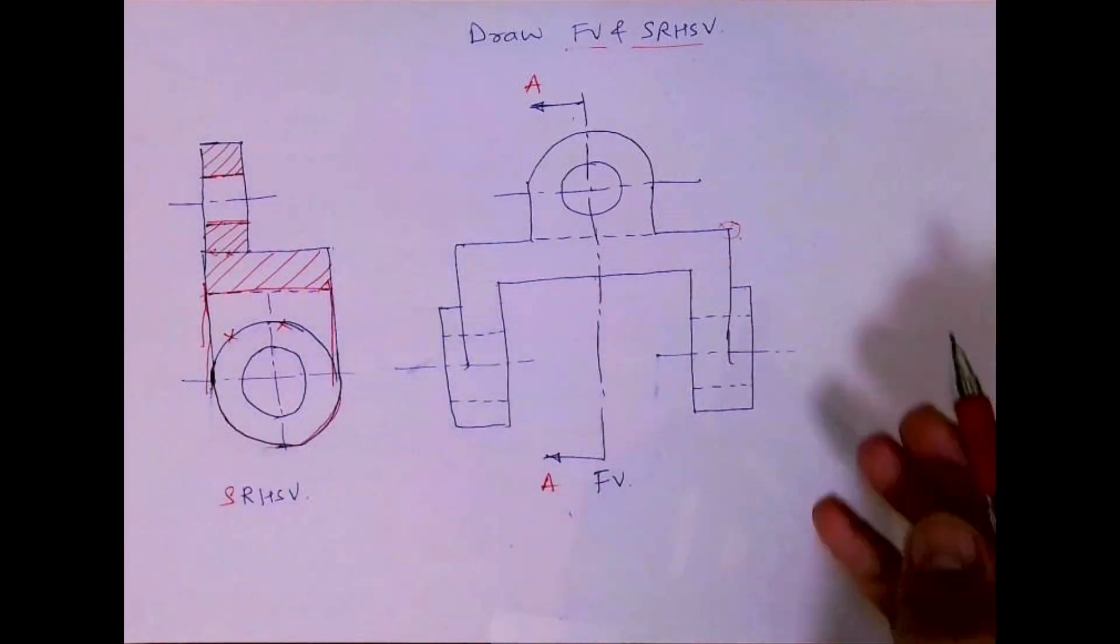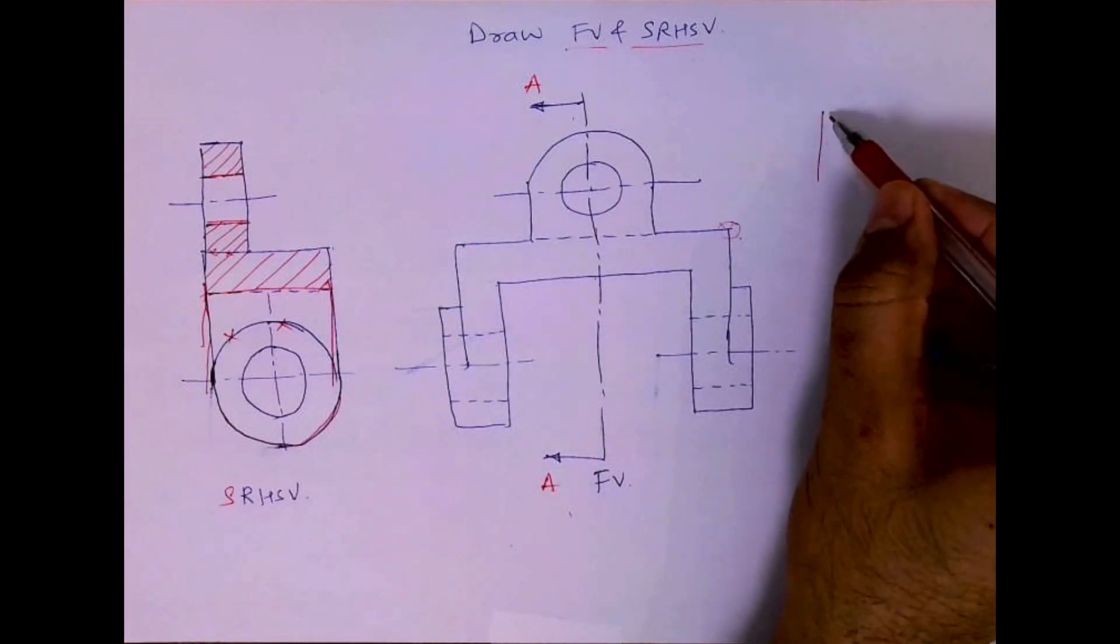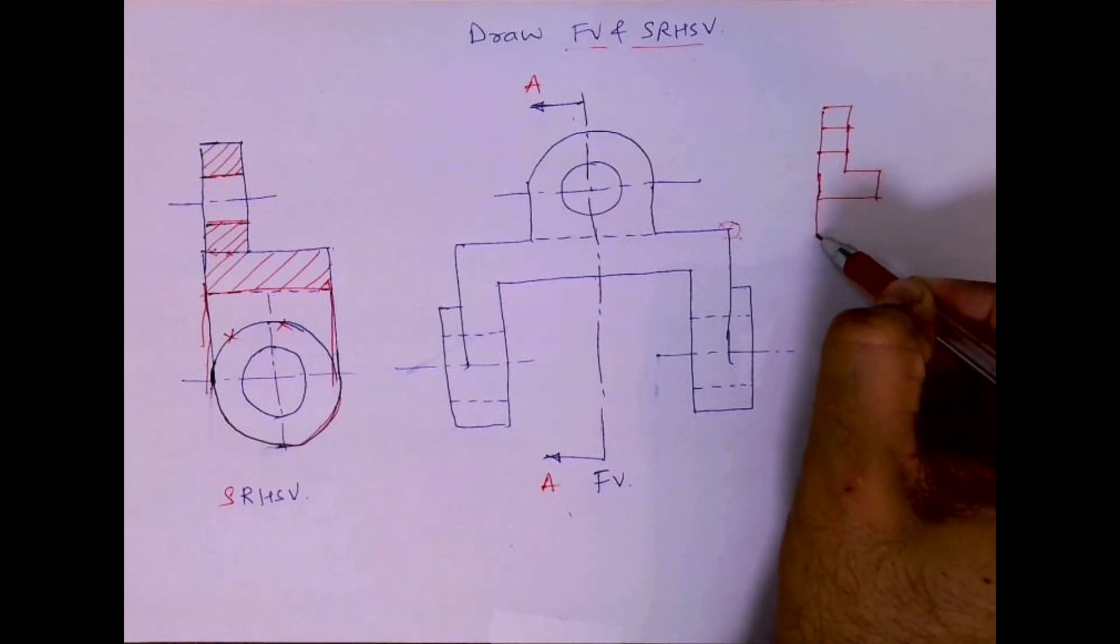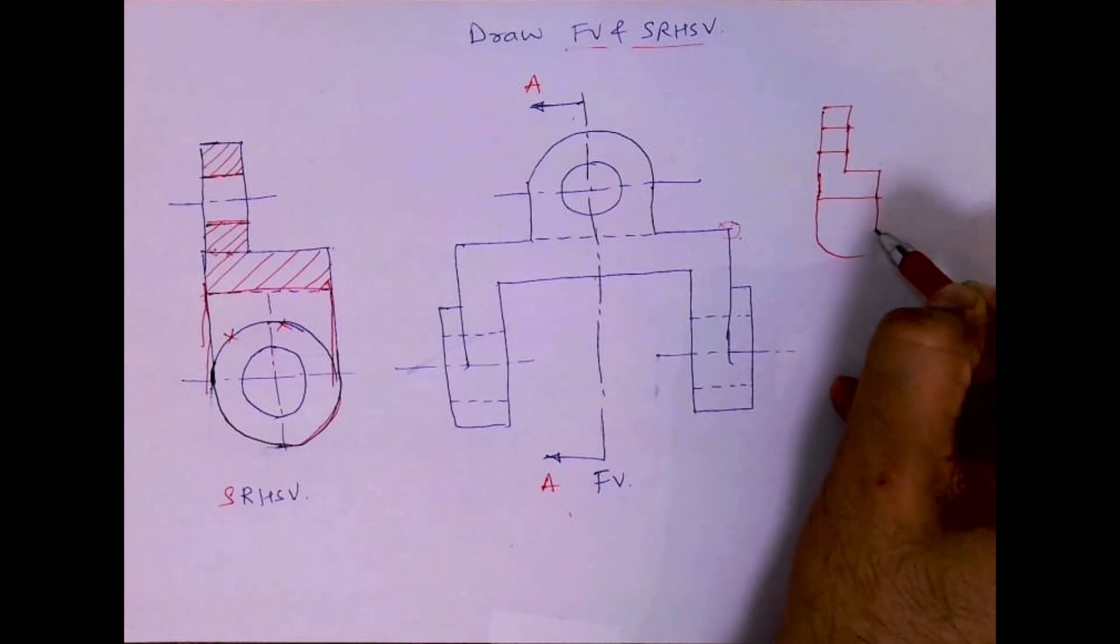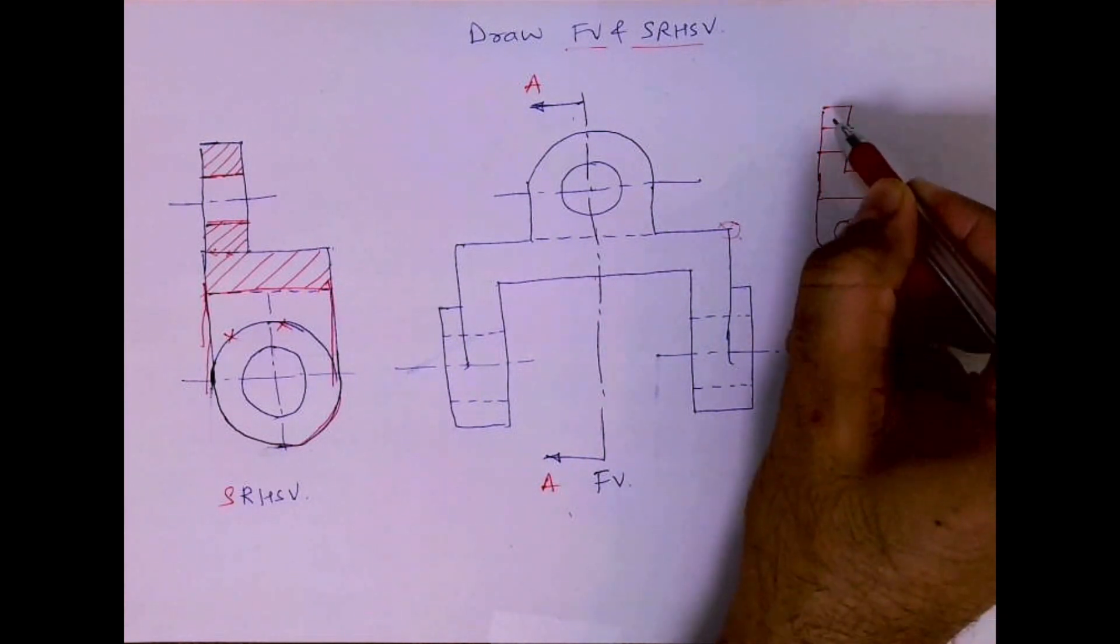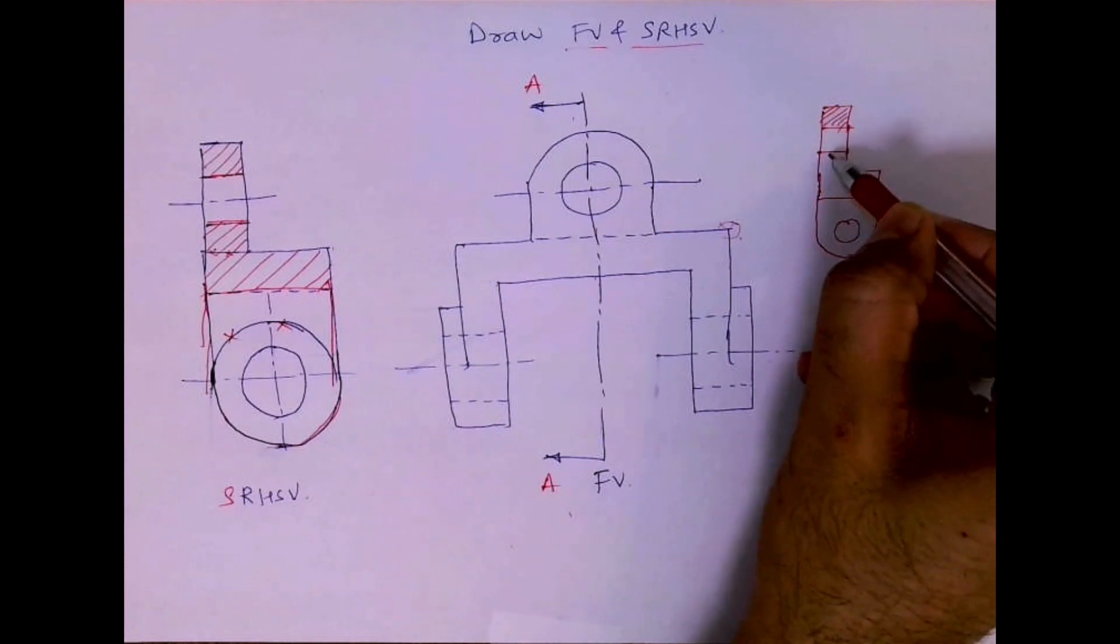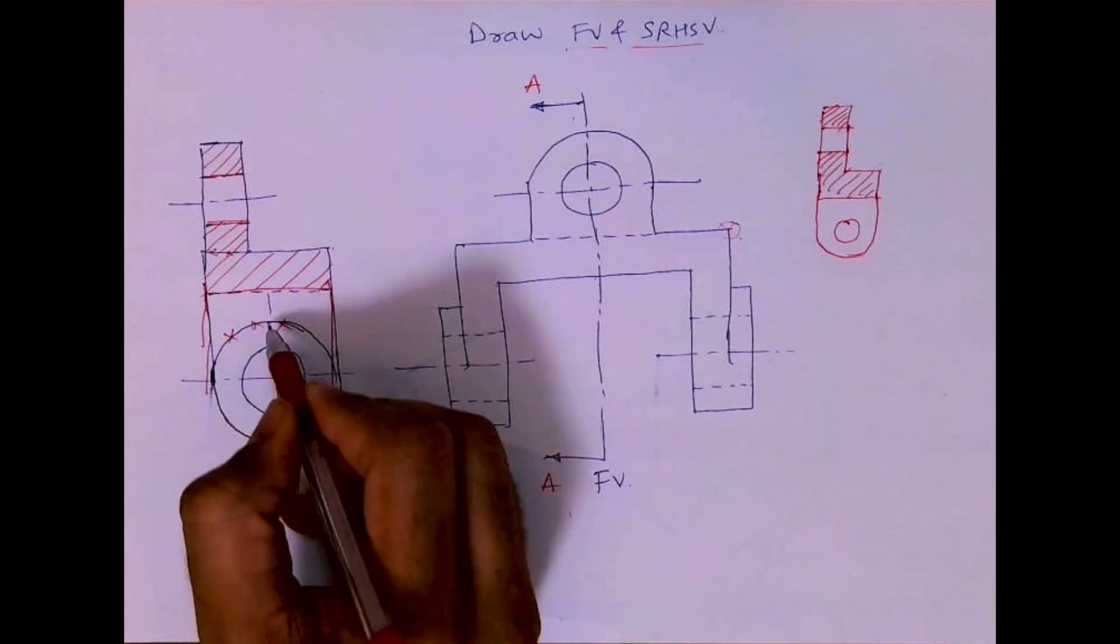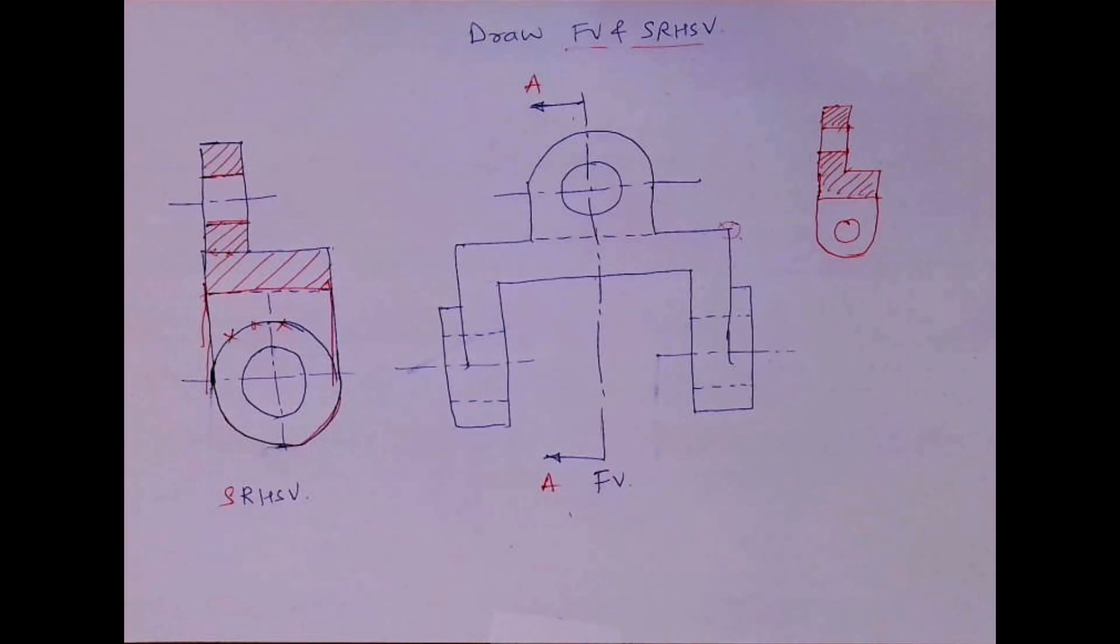So this is what we have to draw in sectional right hand side view. I'll just draw it once again so you'll know how much will be dab. So I hope you people have understood this. Thank you.